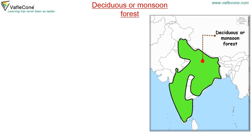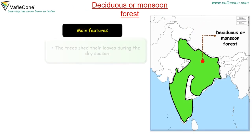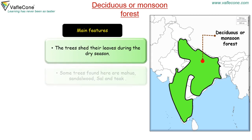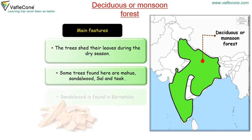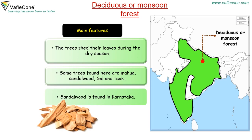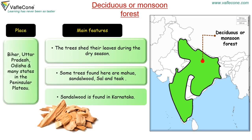Deciduous or Monsoon Forest: The trees shed their leaves during the dry season. Some trees found here are Mahua, Sandalwood, Saal and Teak. Sandalwood is found in Karnataka. This type of forest is found in Bihar, Uttar Pradesh, Odisha and many states in the Peninsular Plateau.